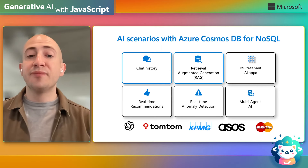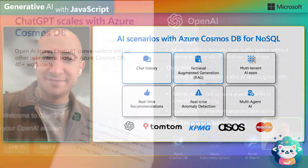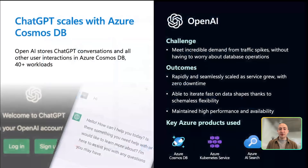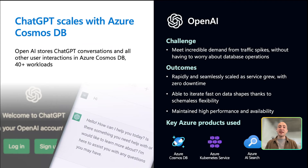We have thousands of customers building incredible applications using Azure Cosmos DB for NoSQL — customers like OpenAI, TomTom, KPMG, ASOS, and Mastercard, and more. Let's double-click on the OpenAI scenario. ChatGPT scales very well with Azure Cosmos DB. All of the chat history for ChatGPT, in order to maintain session consistency between previous sessions or topics, is stored in Cosmos DB. OpenAI chose Azure Cosmos DB for our low latency and high availability and scale architecture, so it can seamlessly meet the demands of their ever-popular application ChatGPT.